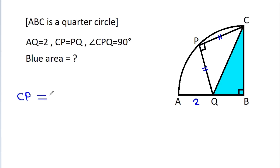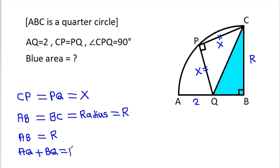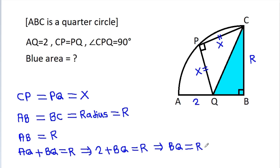We have CP is equal to PQ. Suppose it is x. So CP is x and PQ is x. And AQ will be equal to BC, which will equal r. So BC is r and AB is r. AB is AQ plus BQ, that is r, and AQ is 2 plus BQ equals r. So BQ will be r minus 2.